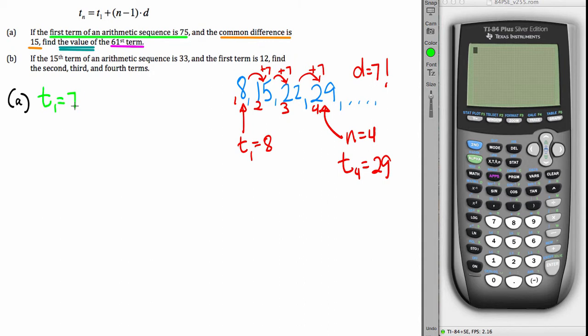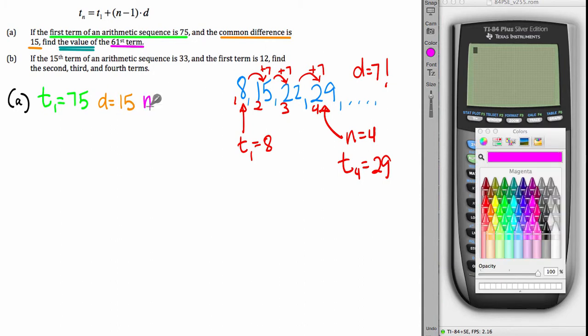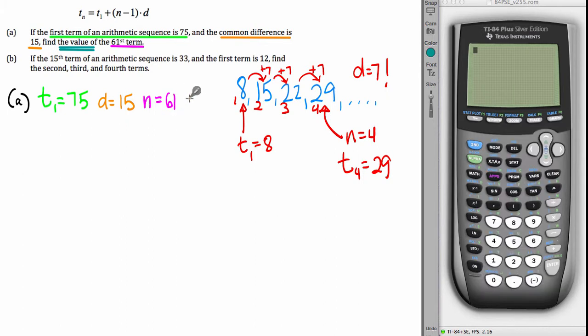T1 is 75. That's the first term. The common difference is 15. That's d. N equals 61 because we're looking for the 61st term. And we don't know the value of that term, so T sub 61 is unknown.